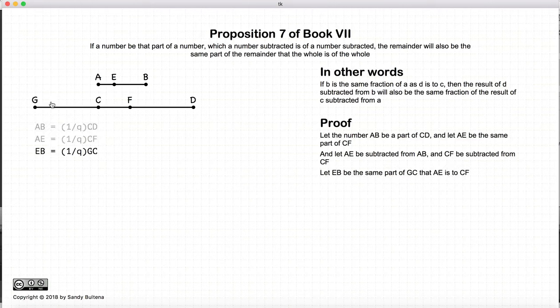Now let us construct a line, gc, so that it is the same fraction as ae is to cf, we want eb to gc. So this ae is a fraction of cf, and it is the same fraction that eb is of gc.